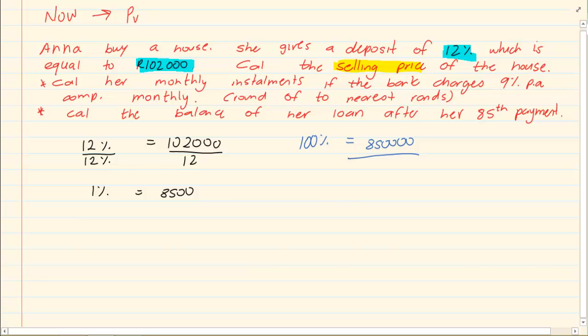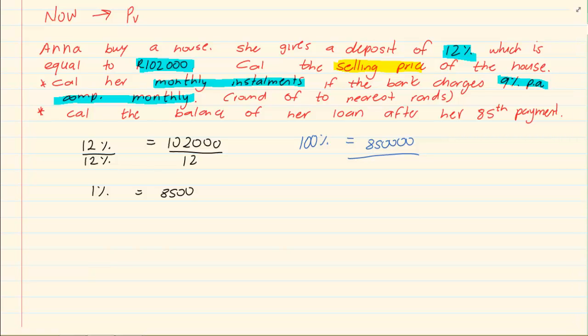They are now saying calculate her monthly instalments if she is charged 9% compounded monthly. You must remember that if she is taking a loan, she is getting the bulk of her money right now. So, we are using a present value formula. What you also must remember is that she is not taking a loan for 850,000. She is taking a loan for 850,000 minus her deposit. She doesn't need to take a loan on her deposit. So, her present value is 748,000.